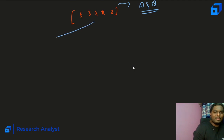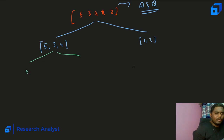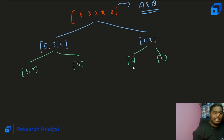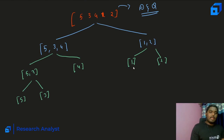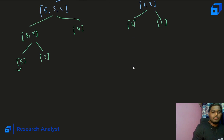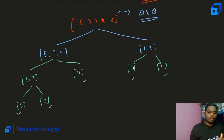Given an array like 5, 3, 4, 1, 2, we divide it into two halves: first half is 5, 3, 4 and second half is 1, 2. We keep dividing until each sub-part contains only one element. So we divide the array until every block has exactly one element.